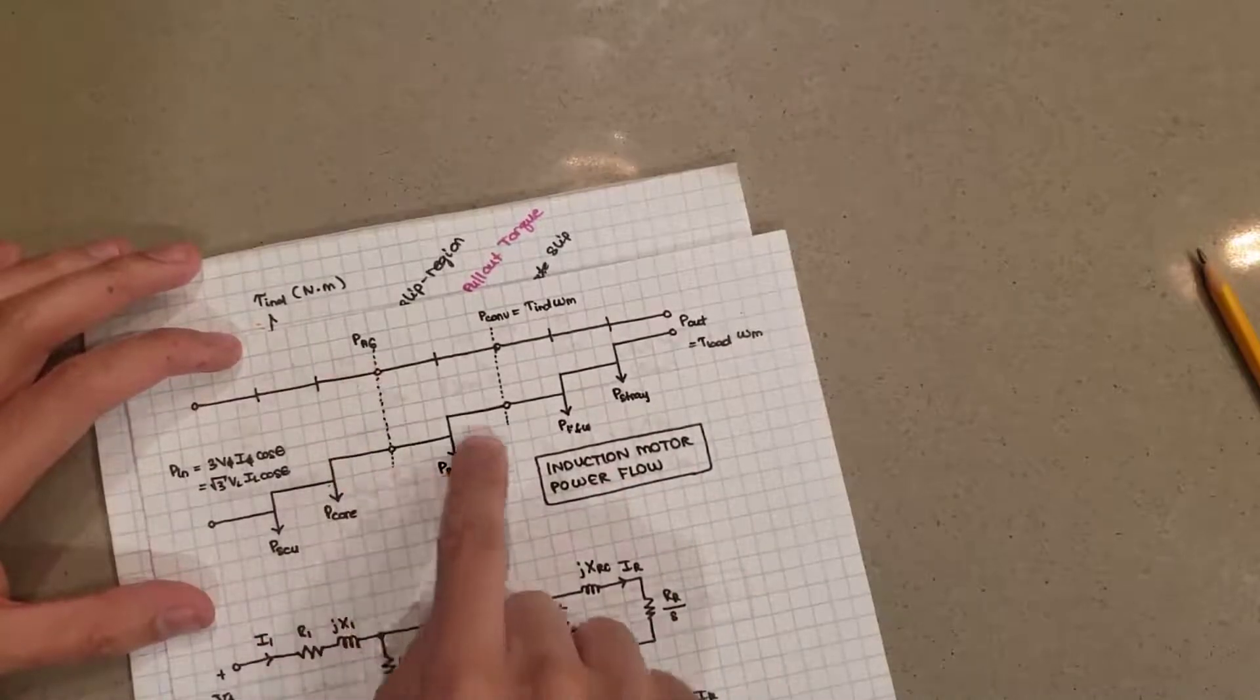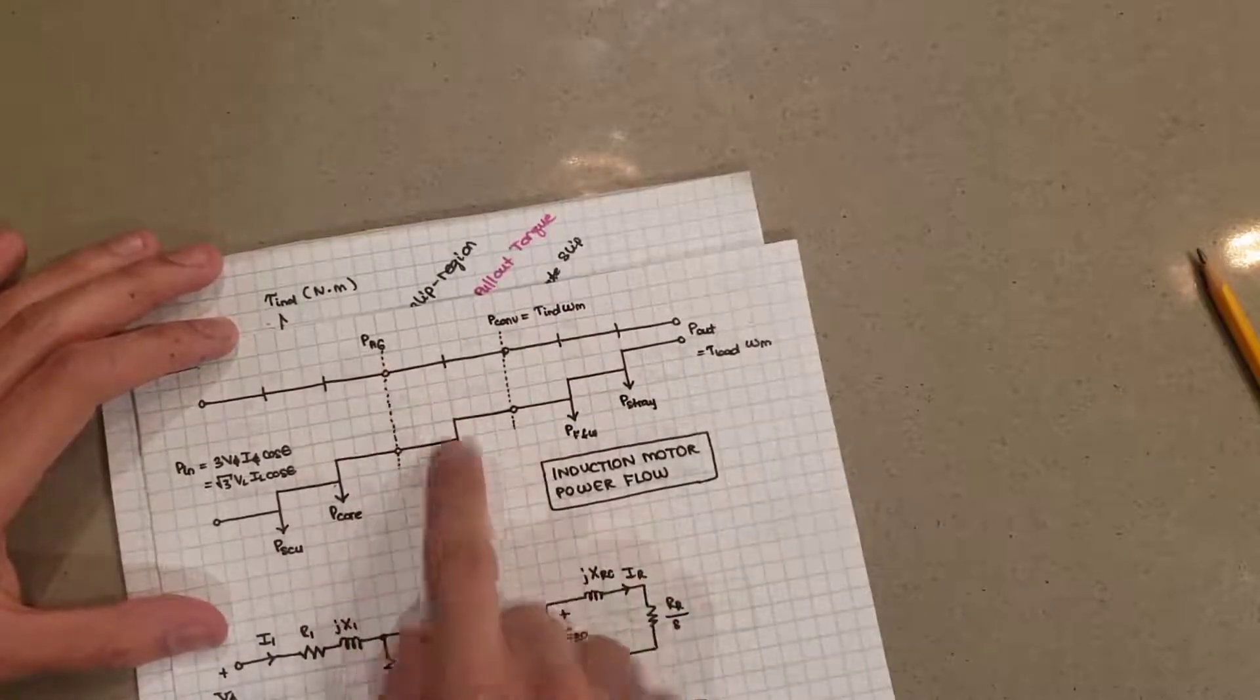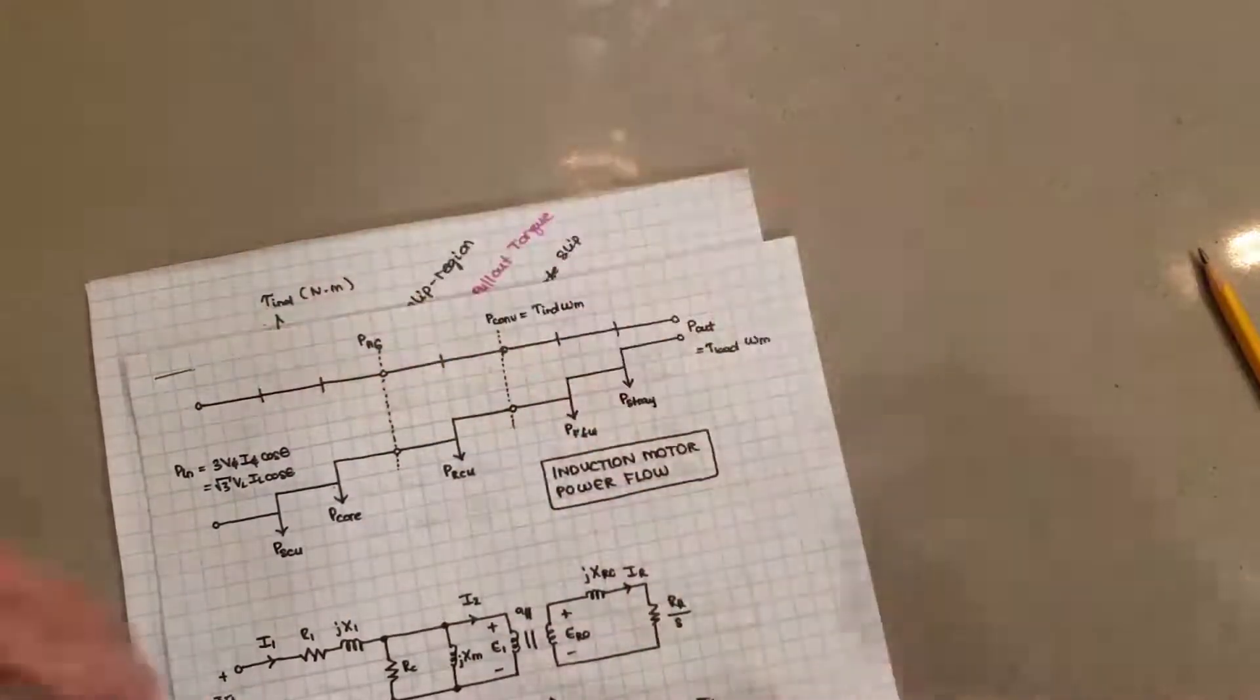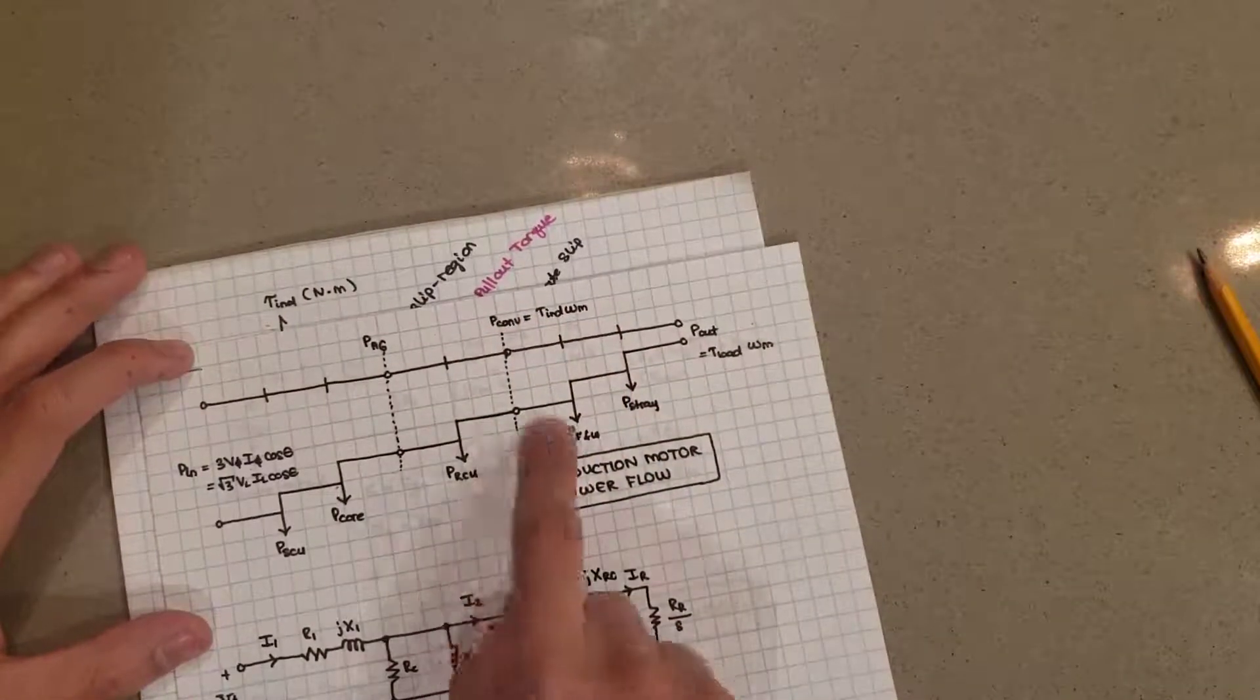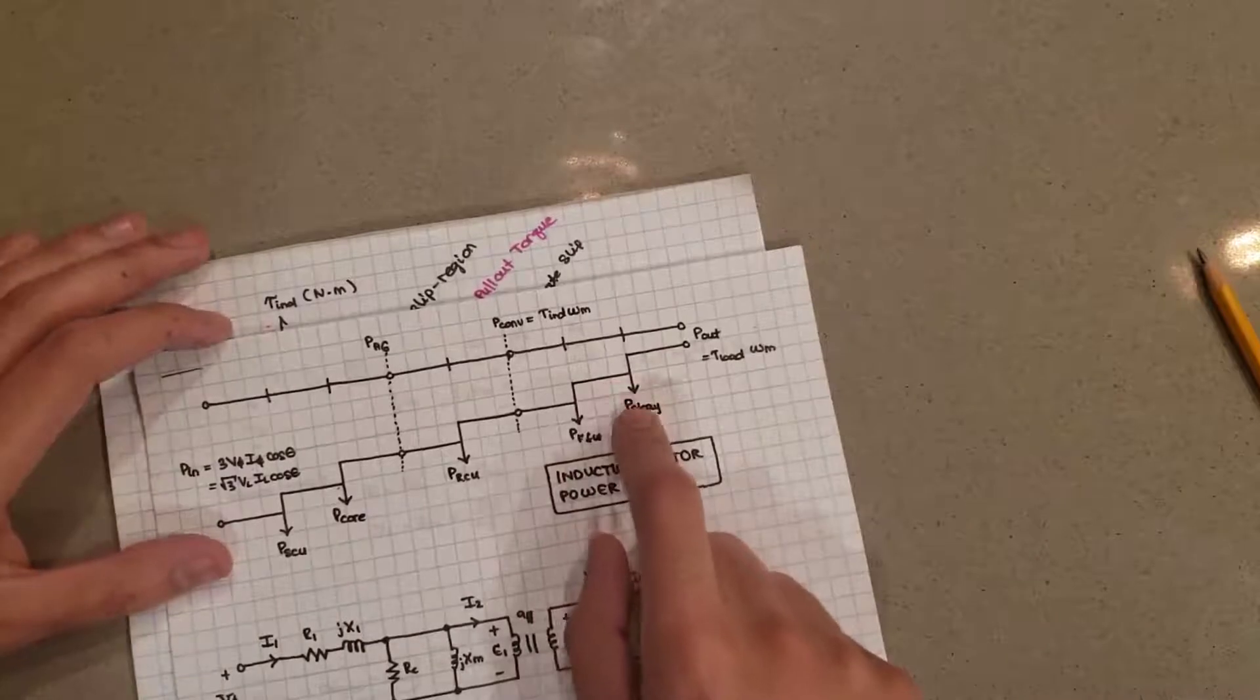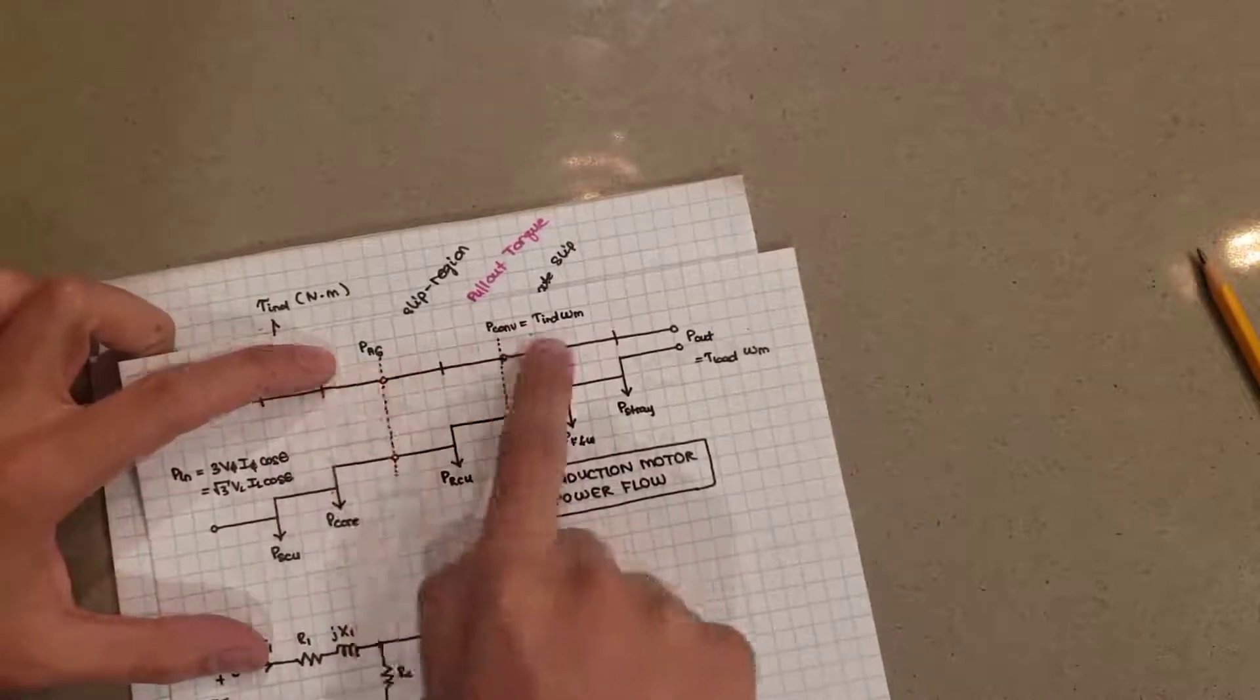However, what happens is, of course, the rotor itself has some resistance. So there's going to be some copper losses in the rotor. So that's going to take away from the air gap power. And then we get to that P converted. P converted stands for how much electrical power is being converted to overall mechanical power. And then we can see that mechanical power, some of that is taken away from friction and windage losses. And then there's some stray losses that we are not able to account for. And that finally leads to the actual power output of the motor, mechanically speaking.